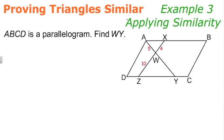In example 3, we're going to be applying similarity, and we're told that quadrilateral ABCD is a parallelogram, and we need to find the length of WY. Well, the first thing I'm going to do is I'm going to label the length of WY with the variable X. Hopefully that doesn't confuse you with this X.